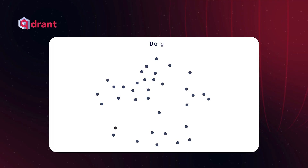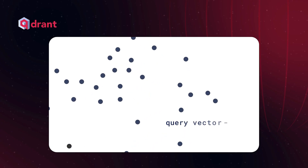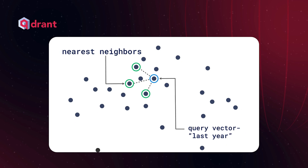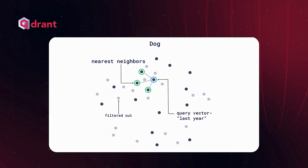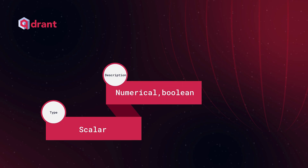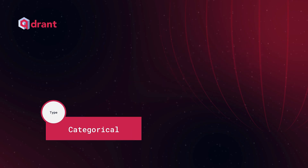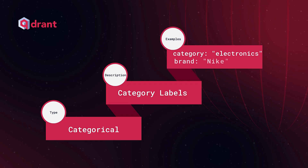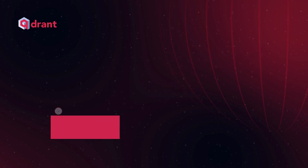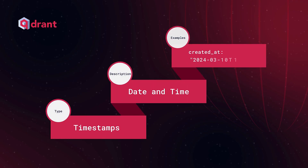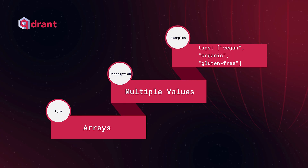This extra information is very important if we want to filter or rank search results based on criteria not directly encoded in the vector. For example, if you're searching for a picture of a dog, the vector helps the database find visually similar images. But if you want results showing only images taken within the last year or tagged with 'vacation,' the payload can help you narrow down those results by ignoring vectors that don't match your query's filtering criteria. The types of payloads we can use alongside vectors include: scalar (numbers or booleans — for prices or ratings), categorical (text tags like 'category: electronics' or 'brand: Nike'), geolocation (latitude and longitude pairs for location-based filtering), timestamps (storing date and time), arrays with multiple values, and also nested objects.